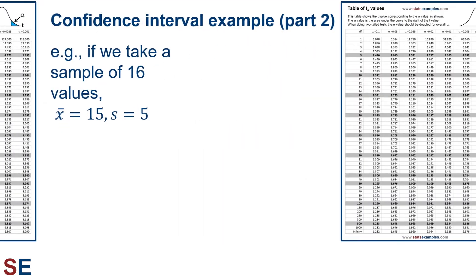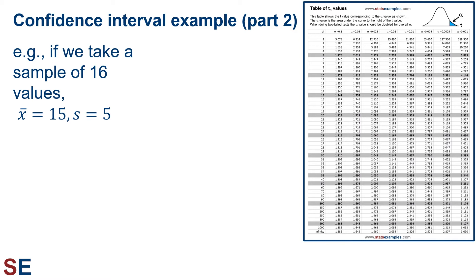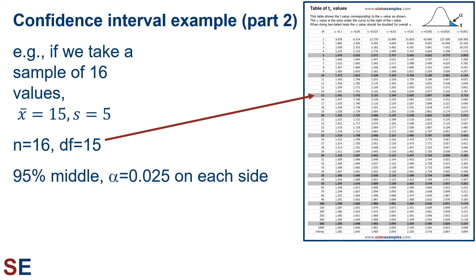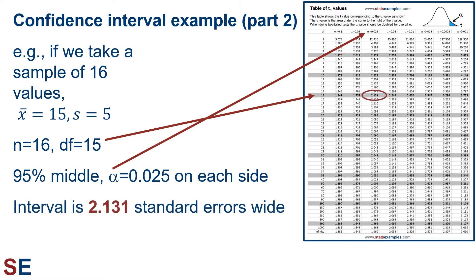Let's use the t-distribution to figure out the width of the 95% confidence interval if we take a sample of 16 values and get a mean of 15 and a sample standard deviation of 5. A sample size of 16 corresponds to a degrees of freedom value of 15. We go to our t-table and identify the row for 15 degrees of freedom. To have a 95% middle region, that means an area of alpha equals 0.025 on each side. We go to the column for alpha equals 0.025, read down to the row for 15 degrees of freedom, and the value is 2.131. That tells us we need to go 2.131 standard errors above and below the mean.